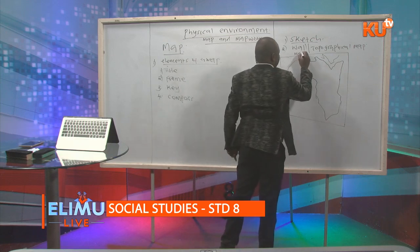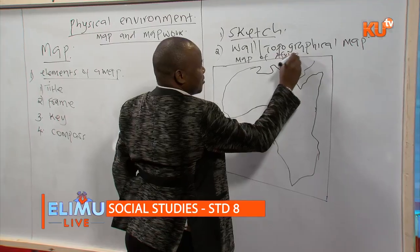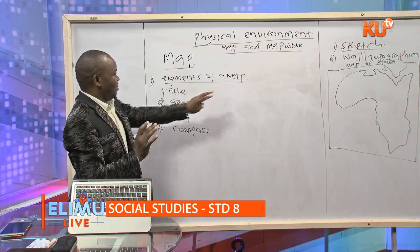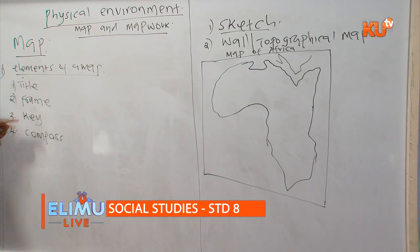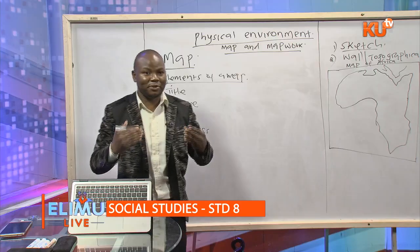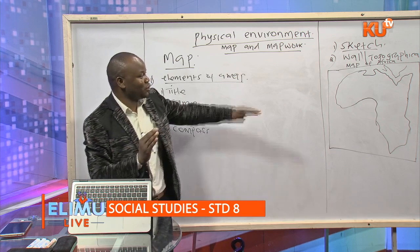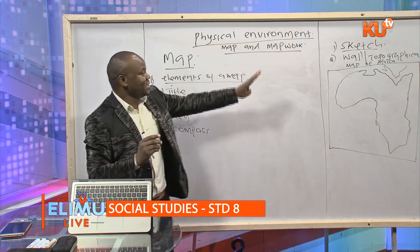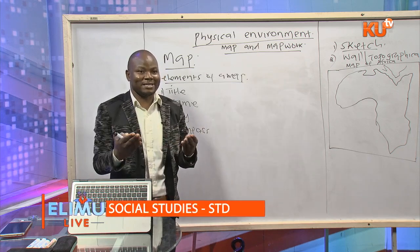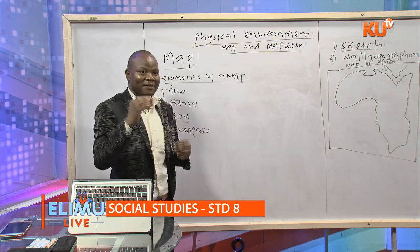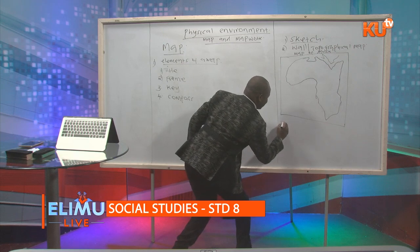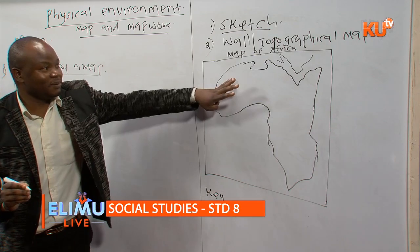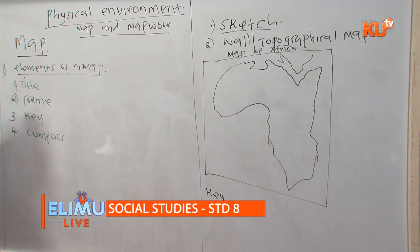For example, this is the map of Africa — 'Map of Africa' is our title. The frame surrounds the map. The key shows the structures and symbols within the map; it is the main element. Without the key, we cannot interpret the map. The key shows different symbols and features within the map, and the map must also include the scale.